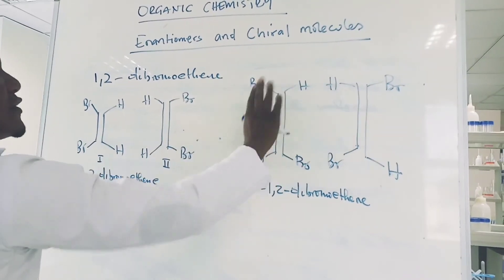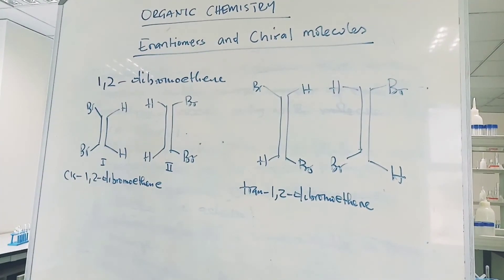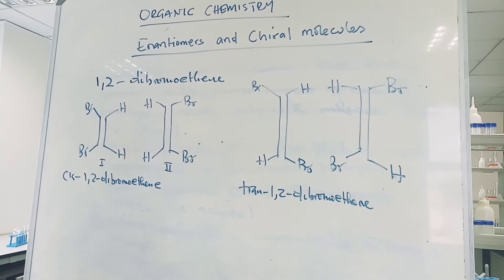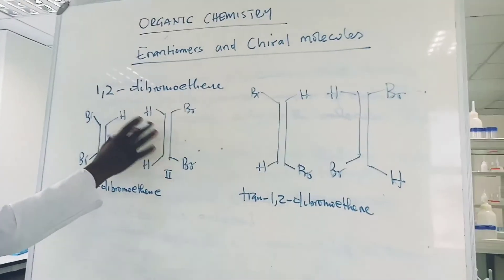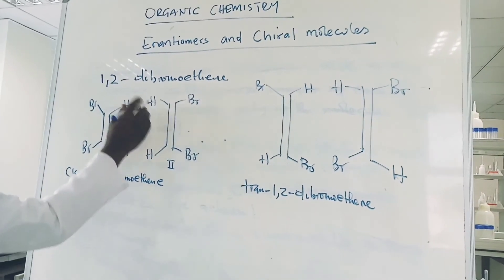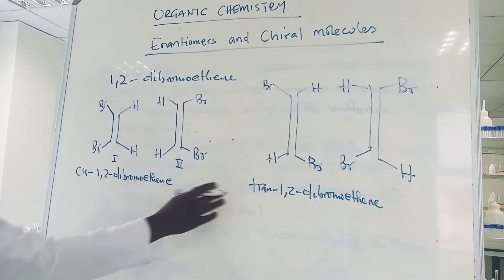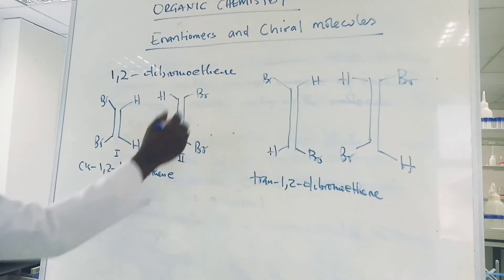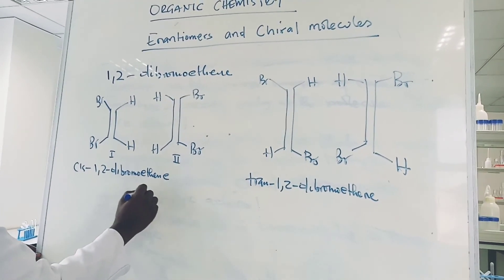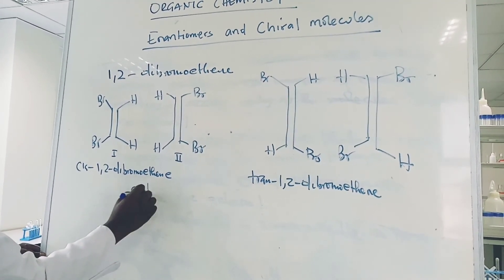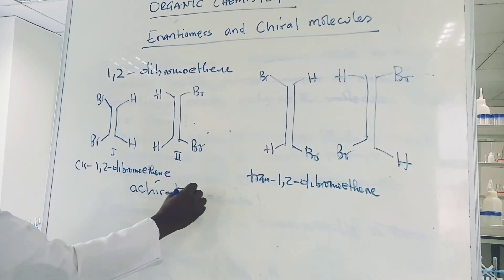So this applies also for the trans. Try rotating 1. You'll see that the two are identical or they are the same. So the cis and trans isomers are achiral. So these are examples of achiral molecules.